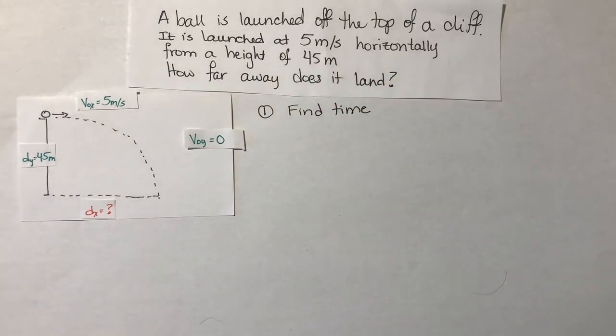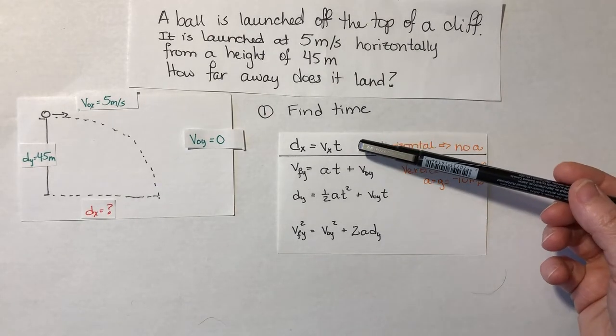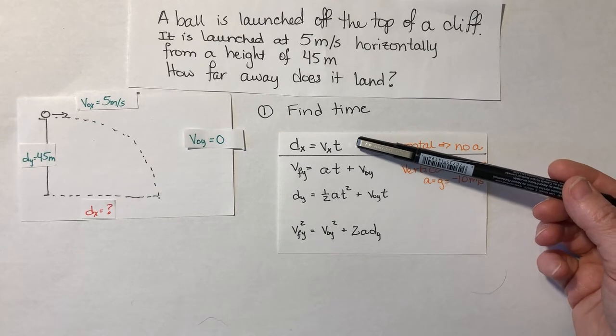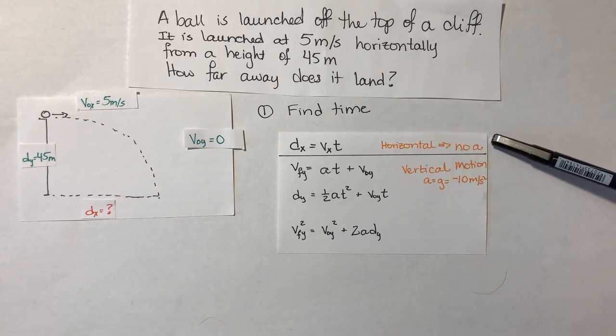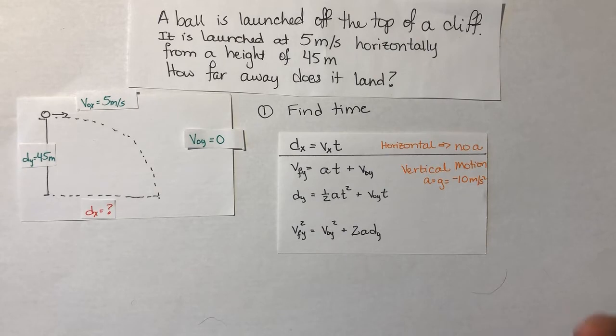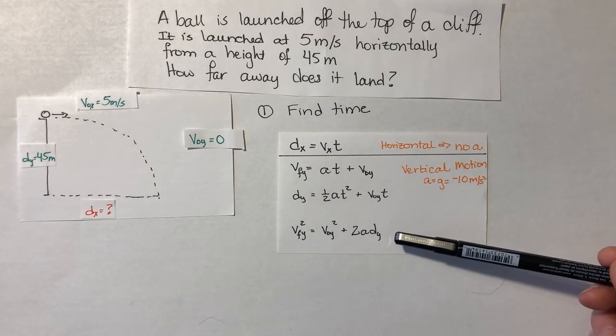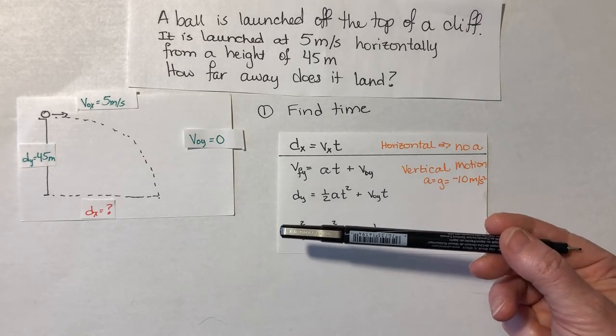Find time. So for this one, I have to look at my equations and say, okay, what do I have that will help me find time? Well, this rate times time equals distance equation that only works when there's no acceleration. So that only works if I'm talking about the horizontal portion of the movement. So I cannot use that one. This last equation does not have time in it at all. So that's not going to be helpful for me at this time. So I'm not going to use that one.